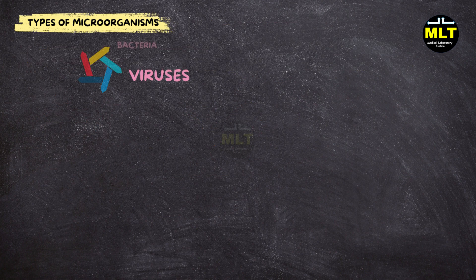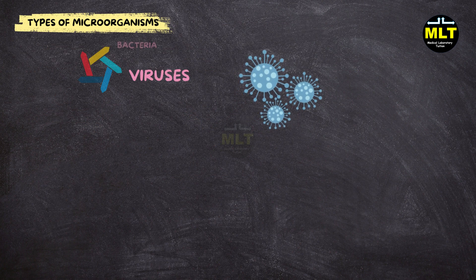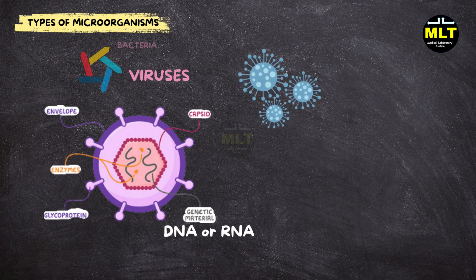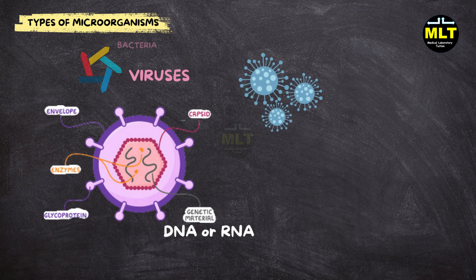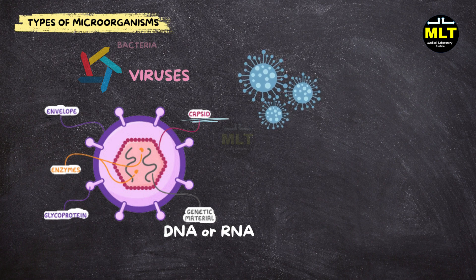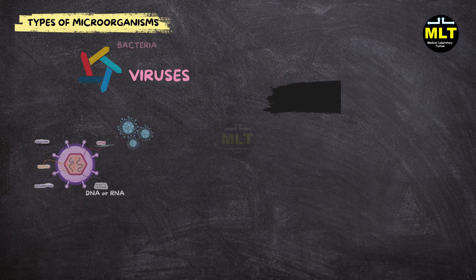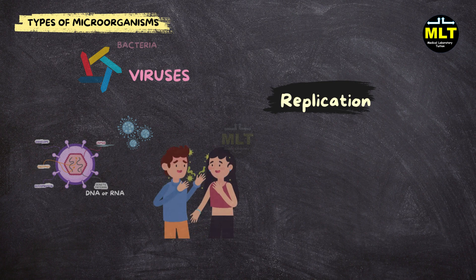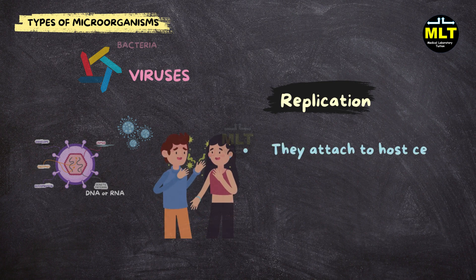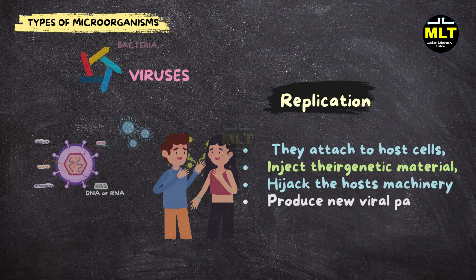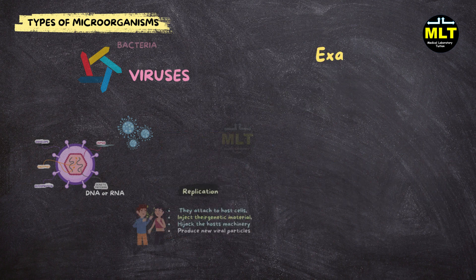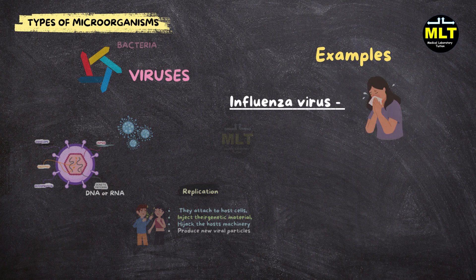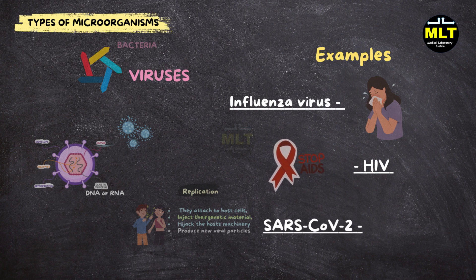Viruses structure. Viruses are acellular entities composed of genetic material — DNA or RNA — encased in a protein coat called a capsid. Some viruses have an outer lipid envelope. Replication: viruses require a host cell to replicate. They attach to host cells, inject their genetic material, and hijack the host's machinery to produce new viral particles. Common viruses include influenza virus, which causes seasonal flu; HIV, which leads to AIDS; and SARS-CoV-2, responsible for COVID-19.